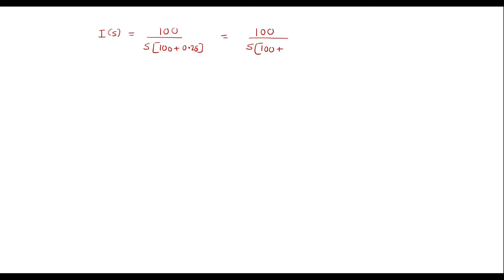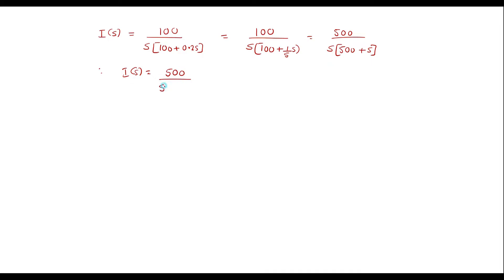Simplifying the denominator: 100 + 0.2s is equivalent to (1/5)s. Taking LCM, the numerator becomes 500 and denominator becomes s(s + 500). Therefore I(s) = 500 divided by s(s + 500).